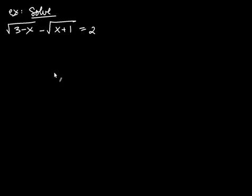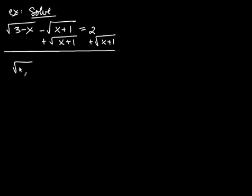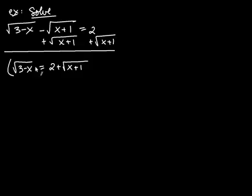Solve the square root of 3 minus x, minus the square root of x plus 1, equals 2. Once again I have two radicals, and the important rule is to always isolate one of the radicals first. I'll isolate the square root of 3 minus x by adding the square root of x plus 1 to both sides. The left-hand side becomes just the square root of 3 minus x, and the right-hand side is 2 plus the square root of x plus 1. Now let's square both sides.